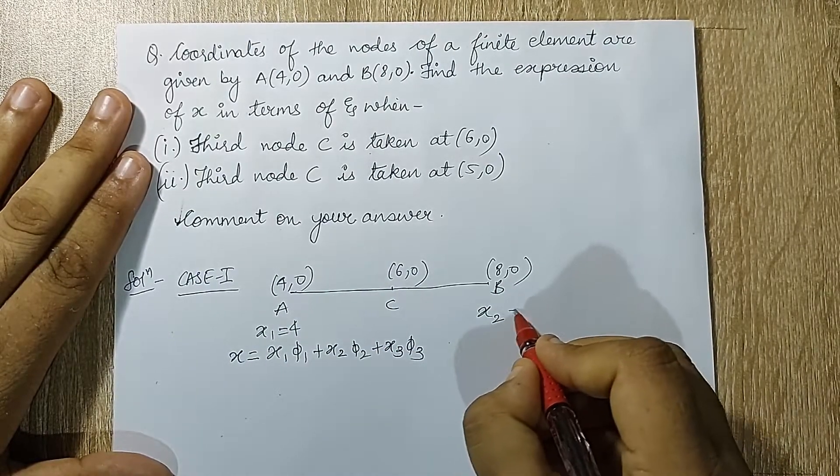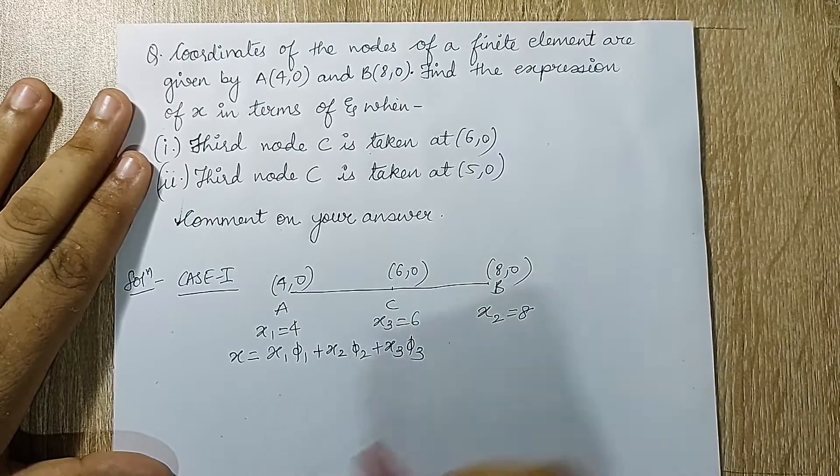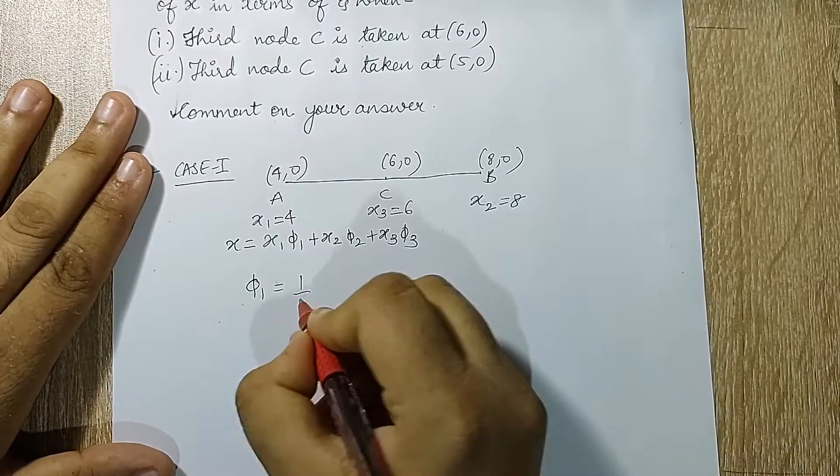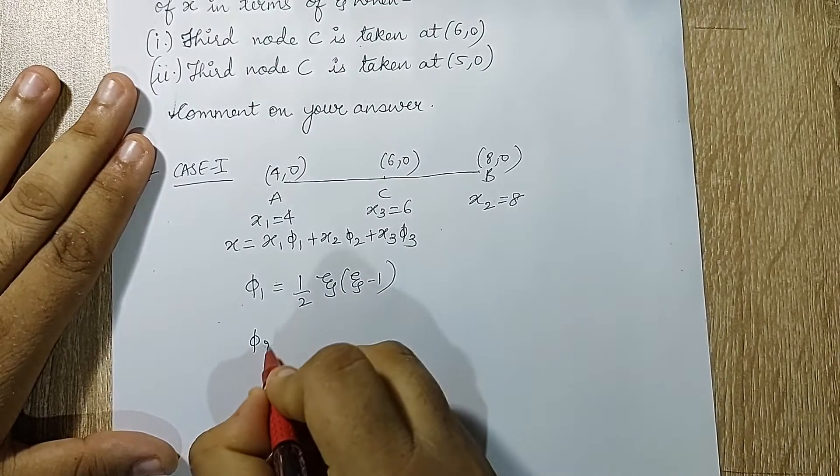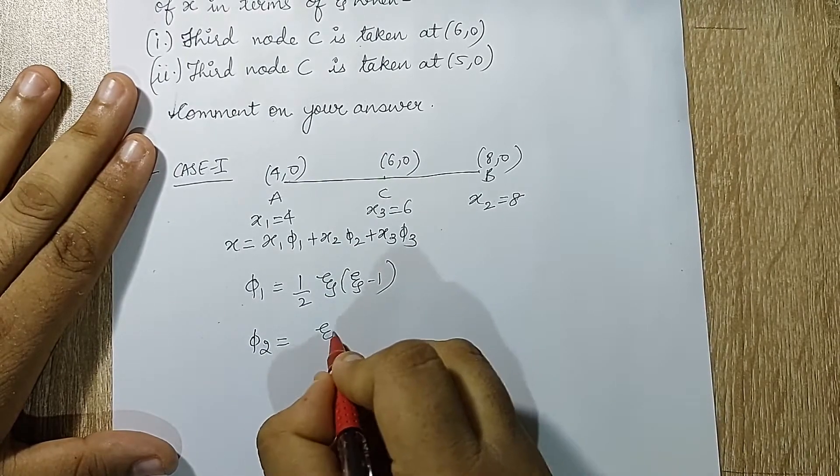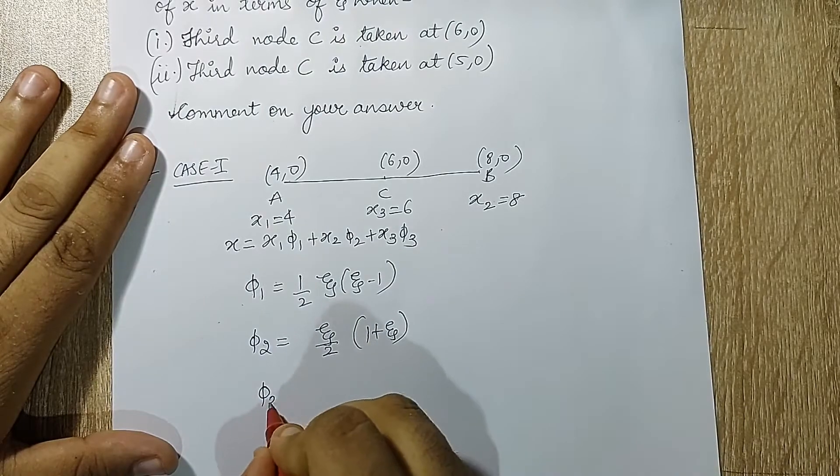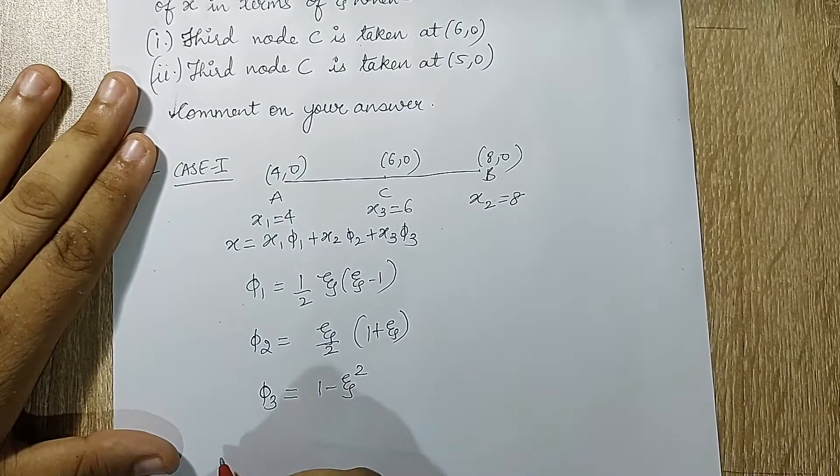Here I know x1 is 4, this is my second node if you recollect, so my x2 is 8 and my x3 is 6. I know the formula of phi1 from the derivation is 1/2*zeta*(zeta - 1), phi2 I had got as zeta/2*(1 + zeta), and phi3 I had obtained as 1 - zeta squared.